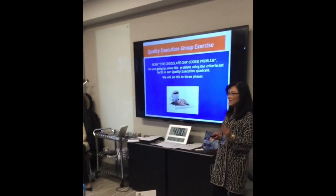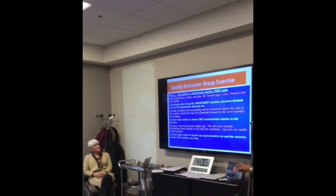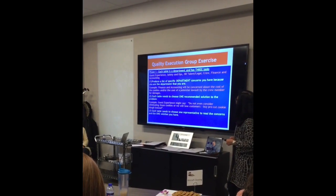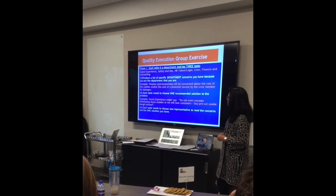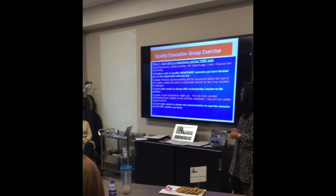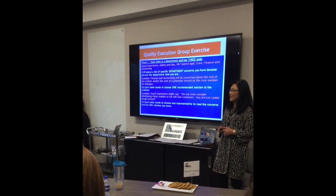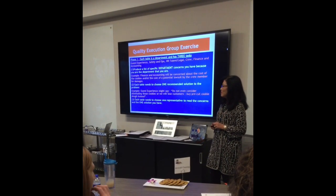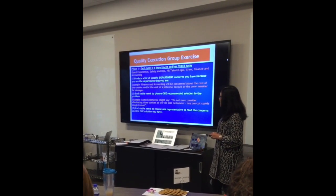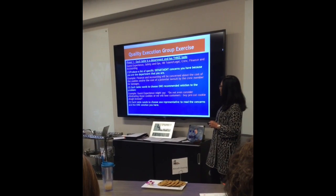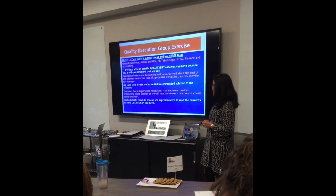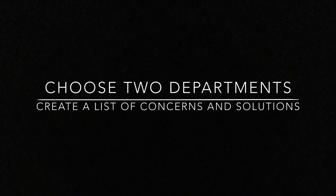We're going to solve the problem in three phases. Phase one: each table is a set of departments and you have three tasks. One, produce a list of specific department concerns you have as the two departments that you are. Two, each table needs to choose one recommended solution to the problem. And three, each table needs to choose a representative to read the concerns and the one solution.